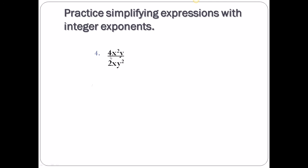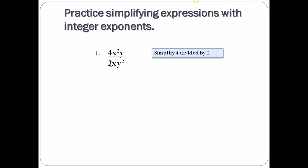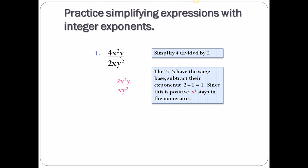Now a division problem: 4x² over 2xy over y squared — that bar means divide. First, 4 divided by 2 is 2. Now combine the x's — same base, subtract: numerator take away denominator, 2 take away 1 is 1. That's positive, so x to the 1 stays in the numerator. Remember: in your final answer, each variable can only appear once.